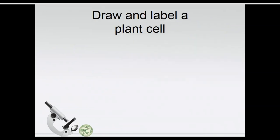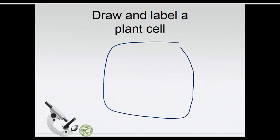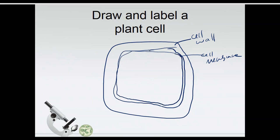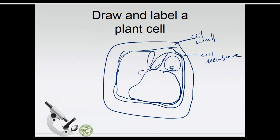You might need to draw and label a plant cell. Make it a little more square-ish than the animal cell. Draw a cell wall and just inside it draw the cell membrane. Draw a large central vacuole, a nucleus with a nucleolus, some chloroplasts, some mitochondria, and you could throw in some ER and ribosomes. That's the cytoplasm.